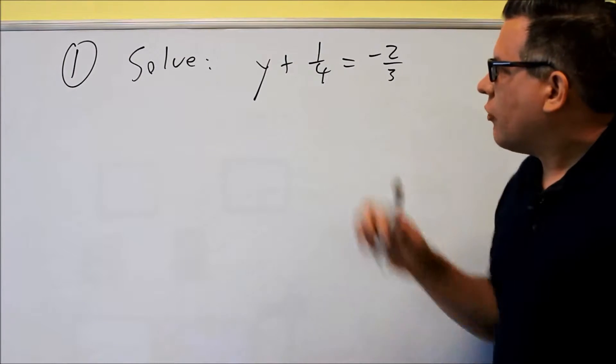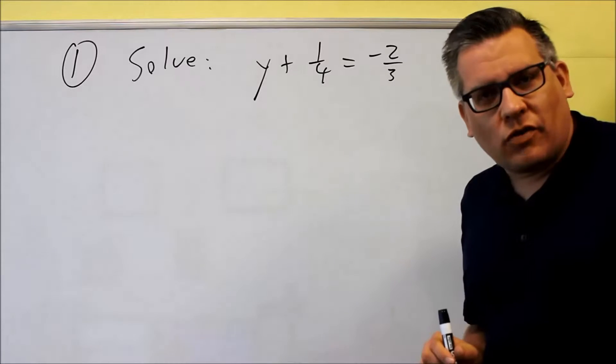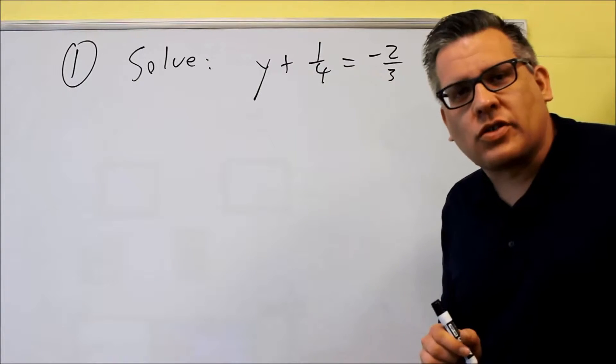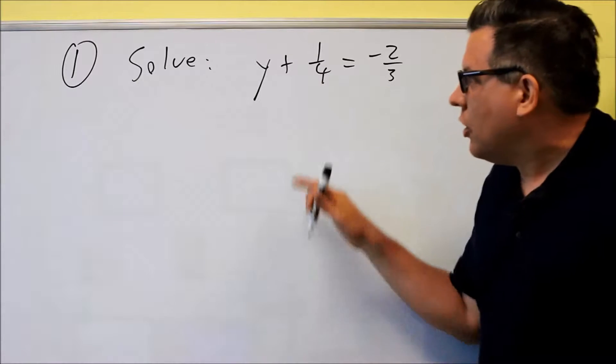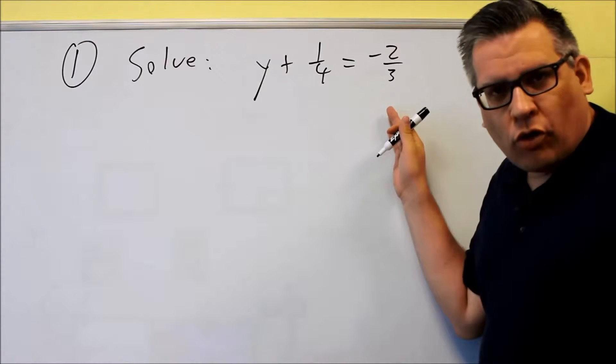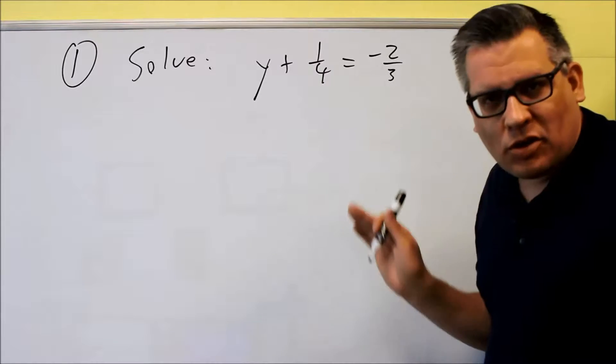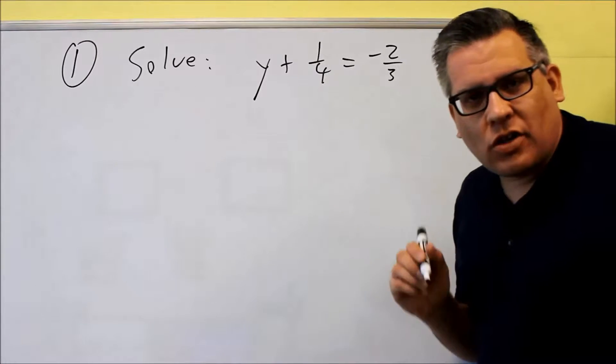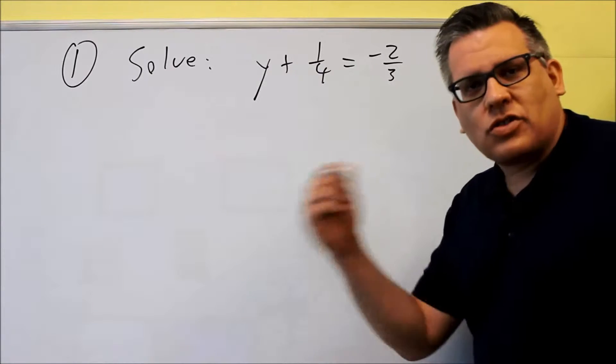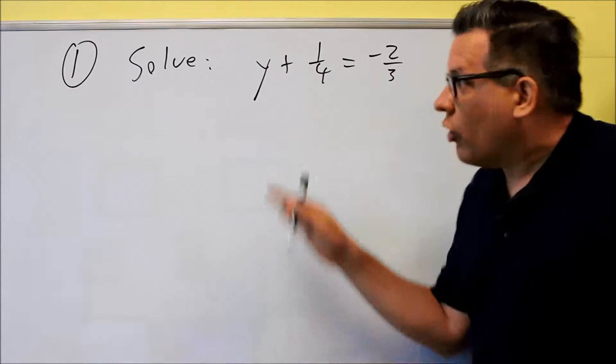Let's start with the first one. Number one, we want to solve y + 1/4 = -2/3. Now there's a couple different ways you could go about doing this problem. You could subtract 1/4 from both sides and then get common denominators.